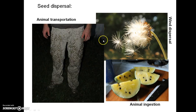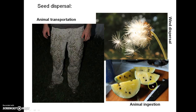Seeds are really designed to be dispersed. Plants are trying to spread their genetic material, and they have evolved many different ways of doing that. Some plants disperse their seeds by wind, like dandelions. Some plants disperse their seeds via animal ingestion, and some disperse their seeds via animal transportation.